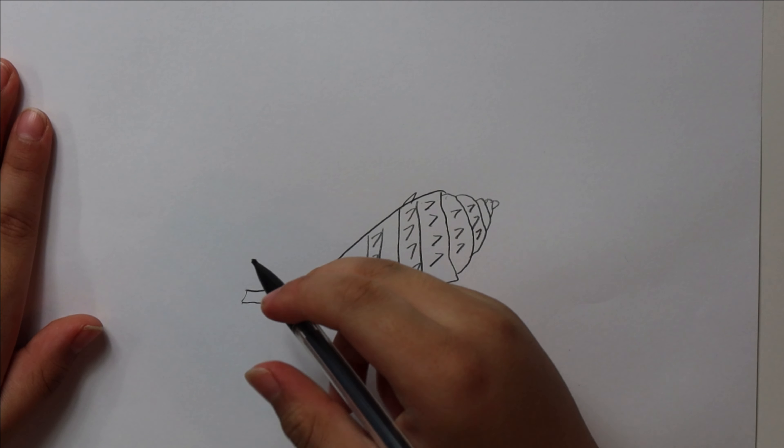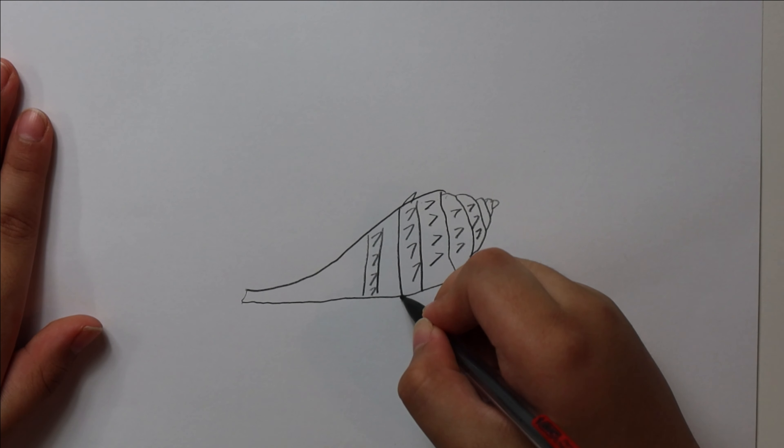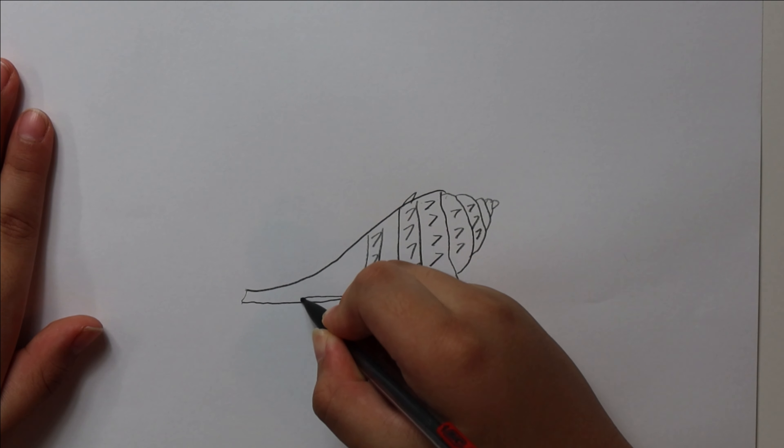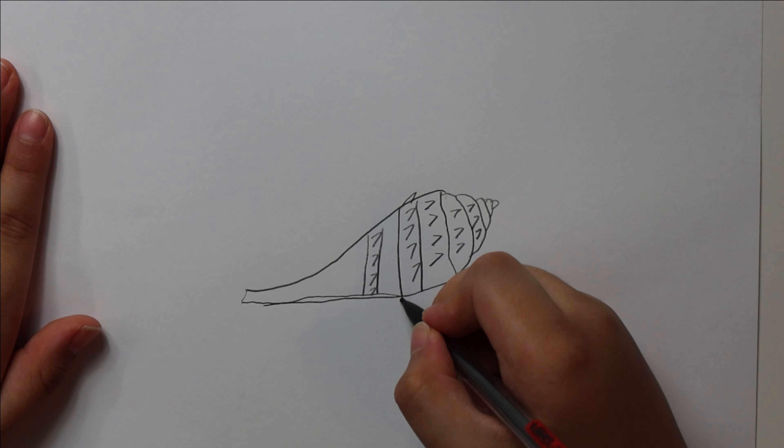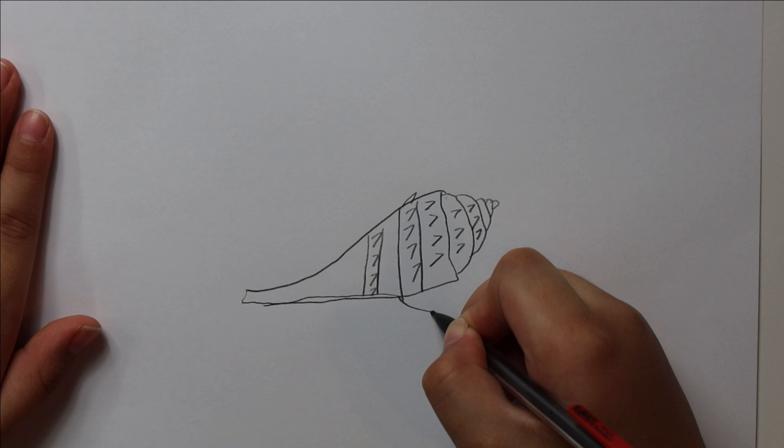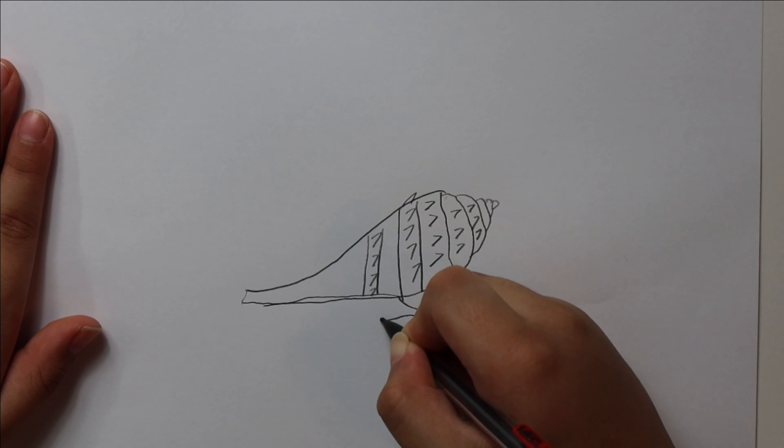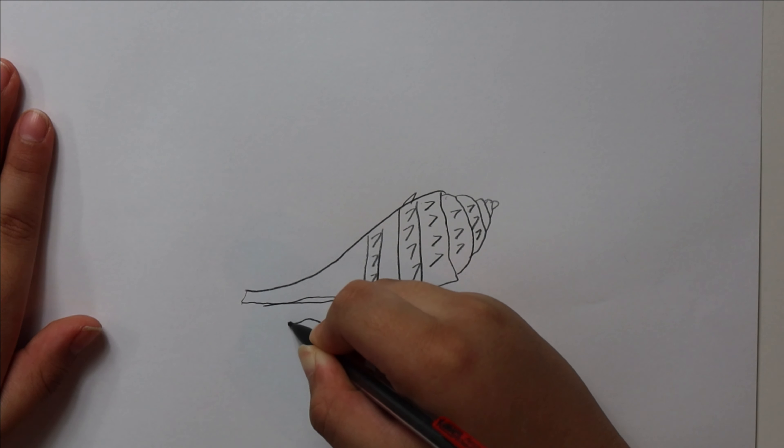So, then back to this. You can draw a hole here, but then stop right there. Then you can do this. This is going to be the snail's foot.